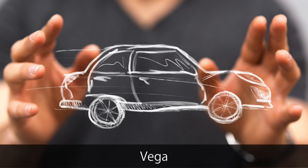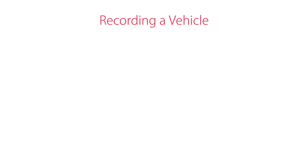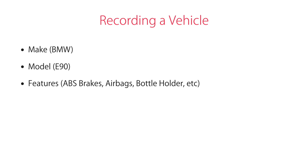Now let's look at the requirements for the application we're going to build. We're going to build a web application for an imaginary vehicle dealer called VEGA. Let's say you want to sell your car — you call VEGA, talk to someone on the phone, and ask them to register your car in their database. Other people who are buyers can browse the vehicles, and if they're interested they will call VEGA and the rest of the process happens offline. As part of recording a vehicle for sale, we need to know its make, its model, and its features — standard features like ABS brakes, airbags, bottle holders, and so on. Here we have a many-to-many relationship between vehicles and features.